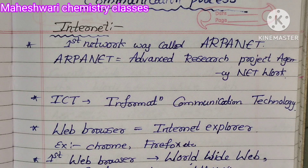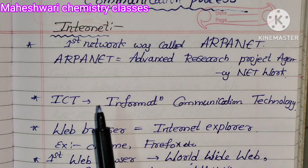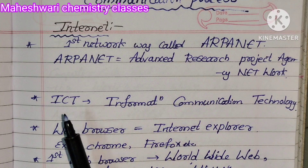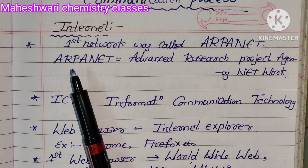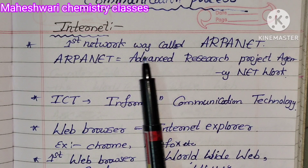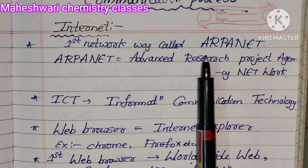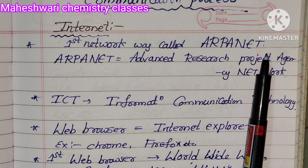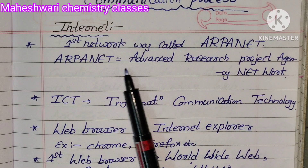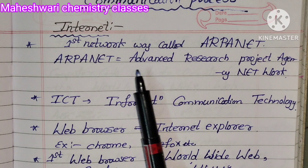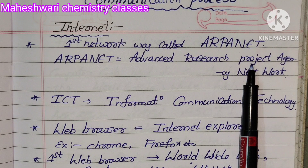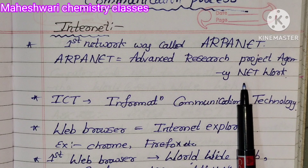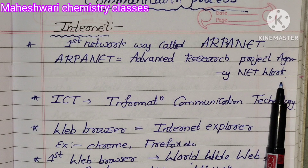Our topic is internet. The first network was called ARPANET. ARPANET means Advanced Research Project Agency Network.